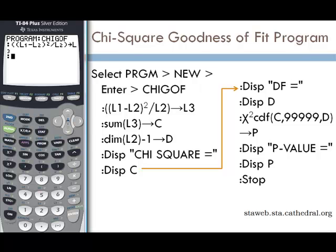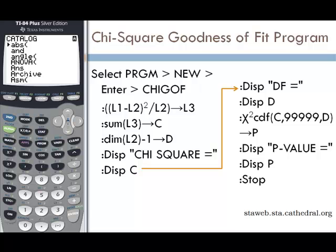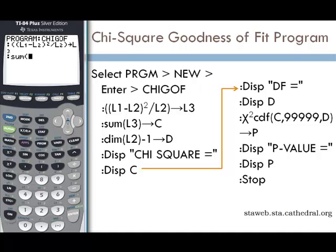Now we want to sum L3. Any time we don't know where a function is, we can find it in the catalog — SECOND ZERO is a catalog of every single function. Since sum is at the end of the S's, we'll go down to T and scroll up one to find sum. Press ENTER, then L3 (SECOND 3), close parenthesis, and store as C (ALPHA C) — C will be our chi-squared value.